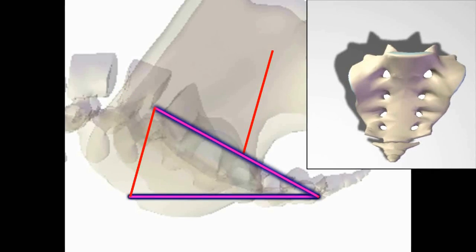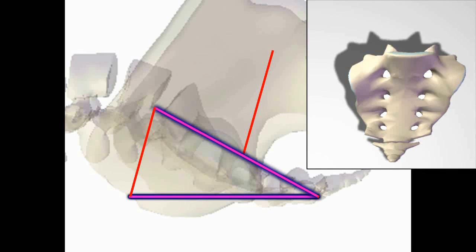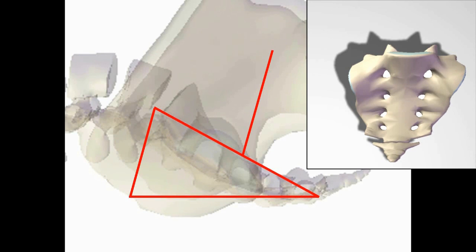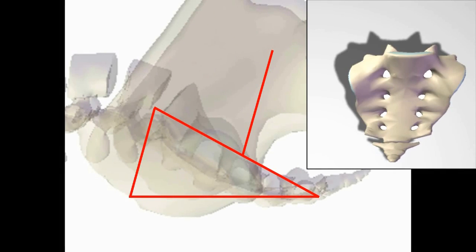Now, the long answer involves some math. But trust me, it'll be worth it. In fact, it's not even really math. It's high school geometry. So in our geometry problem, we are given one piece of information. What we're told is that the body of the sacrum lies in a 30 degree plane from the horizontal.